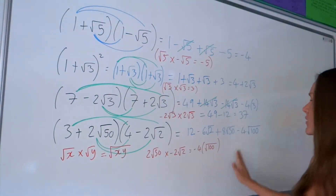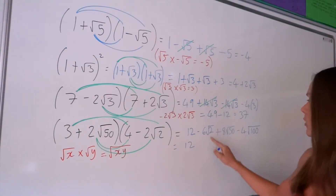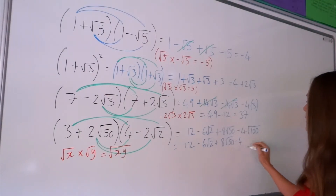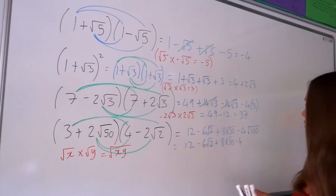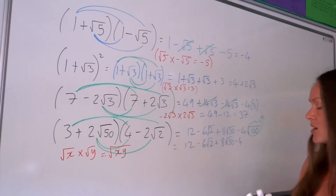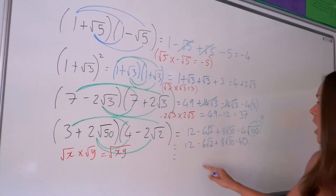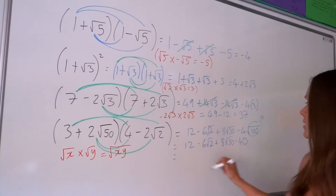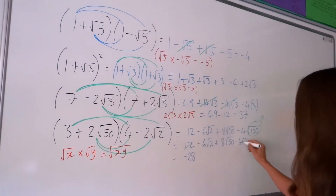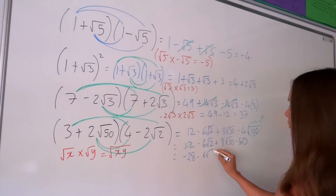So now we need to simplify. I've got 12, I'll leave that for the moment. I've got negative 6 root 2, I'll leave that for the moment too. And I'm just going to simplify this last term: the square root of 100 is 10. So if I multiply 10 with negative 4, I get negative 40. So that last term turns to negative 40. Now I can subtract those numbers: 12 take away 40 is negative 28.